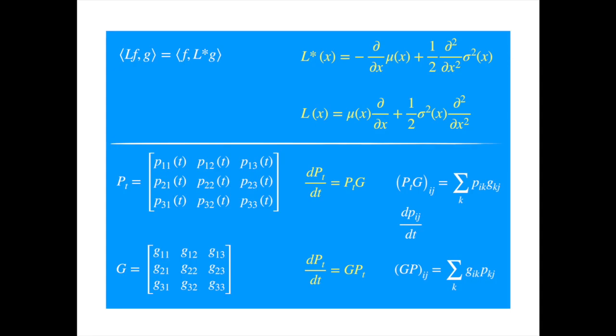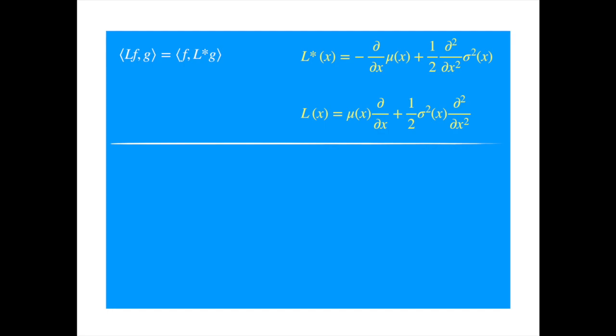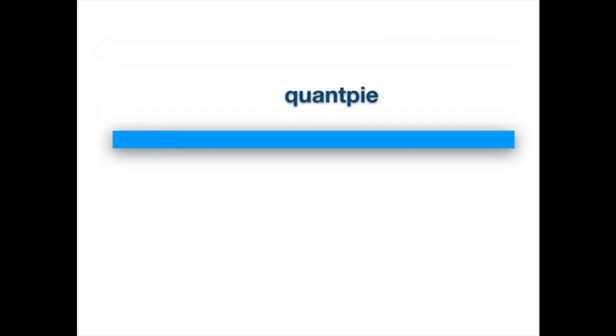Now you can read how the adjoint system will look like for the standard Brownian motion, geometric Brownian and Ornstein-Uhlenbeck processes. You just change the drift and diffusion coefficients. For example, for the Brownian the drift will be zero, and the diffusion coefficient will be equal to one divided by two. Maybe you can repeat the derivation of the adjoint for one of these, starting with the backward equation. So we hope you enjoyed the video, and we look forward to seeing you in the next.